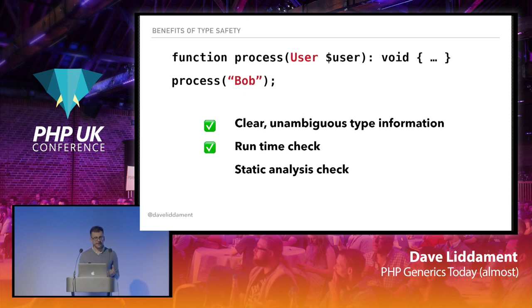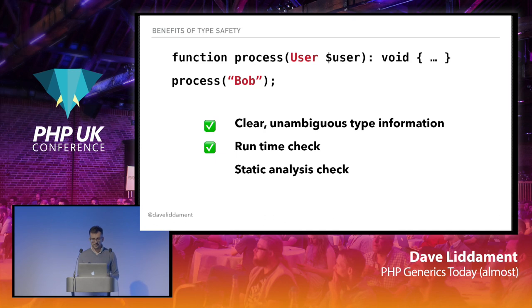We have a runtime check. If we call process with something that's not a User — a string, for example — that code will fail when we try to call process. So we've got a runtime check there to protect us against mistakes. But best of all, we've all just done static analysis right now. We've looked at that code without running it, and we can see there is an issue.